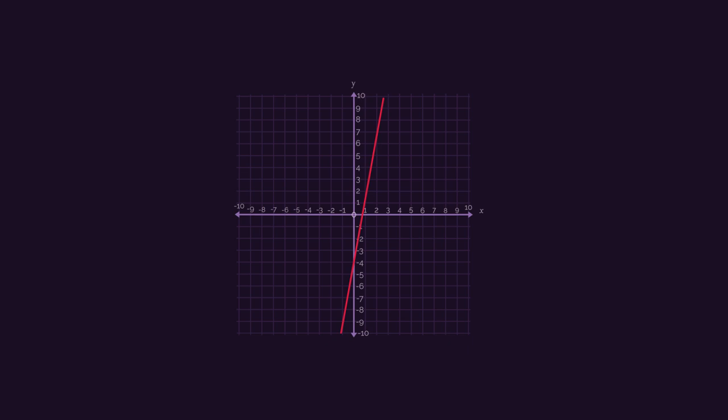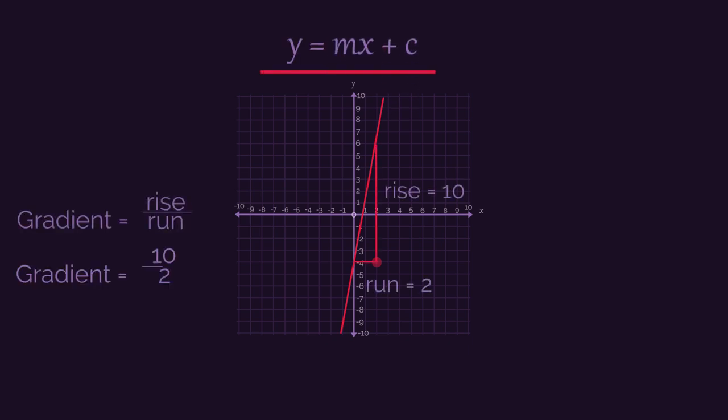So start by finding the gradient. Take two points on the line and use gradient equals rise over run. So 10 divided by 2 means the gradient is 5.